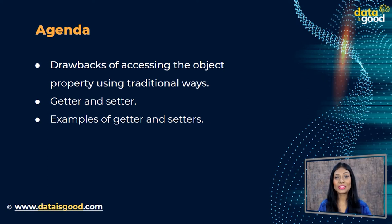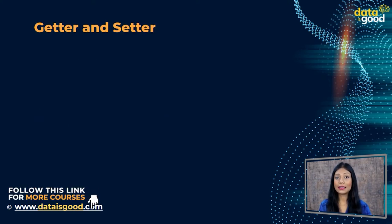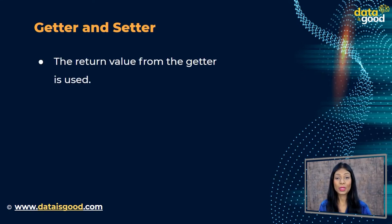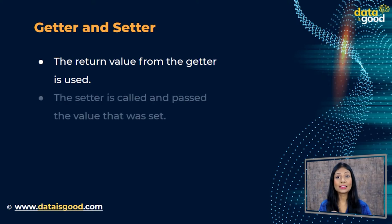We have seen a number of methods to access an object, but the problem with that approach is sometimes repetition of lines, resulting in messy code and confusion. JavaScript helps us with that too. There are two keywords which define the accessor functions: a getter and a setter. We can access and set properties with the help of these methods. When the property is accessed, the return value from the getter is used; when a value is set, the setter is called and passed the value that was set.